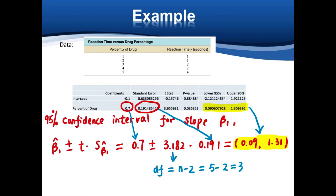We can also calculate the confidence interval for the slope beta 1. Beta 1 is 0.7, plus or minus a t-score times the standard error from the coefficient output. The t-score degree of freedom is again n minus 2. So this is what we calculated ourselves using the manual calculations for the regression.